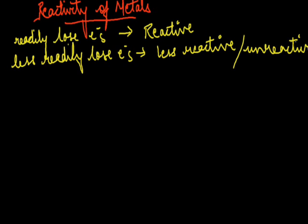Basically, depending upon their tendencies, they are said to be reactive, less reactive or unreactive. This is a comparative term. Reactivity of metals shows the comparative reactivity of metals among themselves. We will see a small reactivity series. We are doing the comparison on the basis of the hydrogen scale. Metals placed above hydrogen will be more reactive and metals placed after hydrogen will be less reactive.